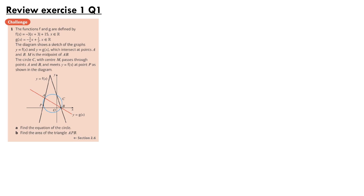M is the midpoint of AB. The circle C, centred at M, passes through the points A and B, and meets y equals f(x) at the point P, as shown in the diagram. For part a, we're asked to find the equation of the circle, and for part b, the area of the triangle APB.